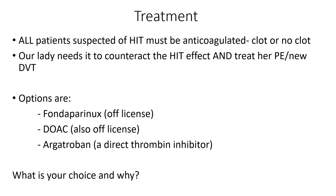Your options are Fondaparinux, which is an injection and essentially the active component of heparin — this is off-license. You can use a DOAC, which anecdotally seems to work quite well but is also off-license. If possible, we generally tend to pick one of these two because they are easier. You can also use Argatroban, which is a direct thrombin inhibitor. Thinking about her past medical history, I'm going to reluctantly go for Argatroban here — it works well but is a bit more complicated. Fondaparinux and DOACs both have eGFR limits, whereas Argatroban is safer in renal failure. There are protocols for using it — always speak to your pharmacist and check the BNF. There are guidelines on the intranet for Argatroban on the HIT guideline.